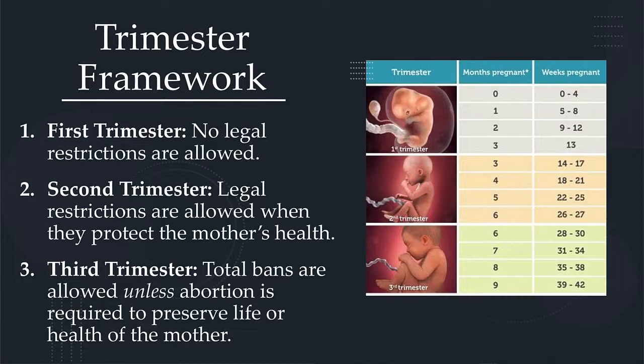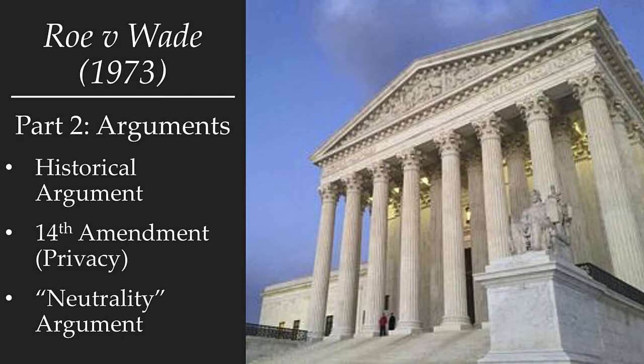To recap: the court said the state can't restrict access to abortion during the first trimester. During the second trimester they can restrict access if doing so protects the health of the mother. During the third trimester, the state can make abortion illegal unless abortion is required to protect the life or health of the mother. Now, what reasons and arguments did they give for this three-trimester model? There are three major arguments: the historical argument, the 14th Amendment argument from privacy, and the neutrality of law argument.